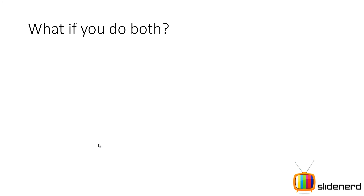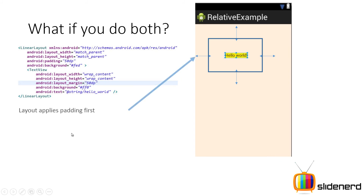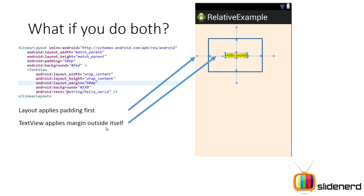Now, what if you do both of them at the same time? I have a linear layout with a padding of 50dp and a margin of 50dp on the text view. The linear layout tries to push the text view 50dp inside from all four sides, and the text view also says stay 50dp away from all four sides. This invisible rectangle I've drawn shows the difference. The four arrows represent the padding applied by the linear layout, and within that rectangle, the next 50dp arrows are the margin the text view has requested. This is the combined effect of margin and padding when you apply both together.